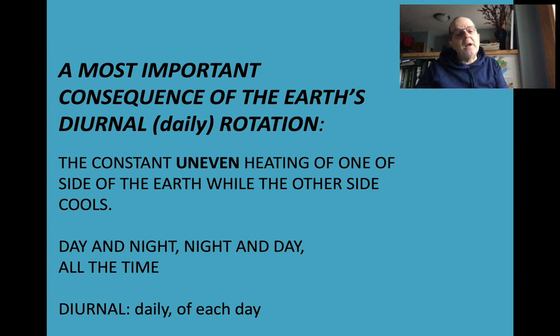A most important consequence of the Earth's diurnal—this is a word you need to know—diurnal, daily rotation, is that the constant uneven heating of one side of the Earth goes on while the other side is always cooling. This is a most important consequence of our daily rotation, the constant uneven heating of one side of the Earth while the other side cools day and night, night and day, all the time, diurnal change.